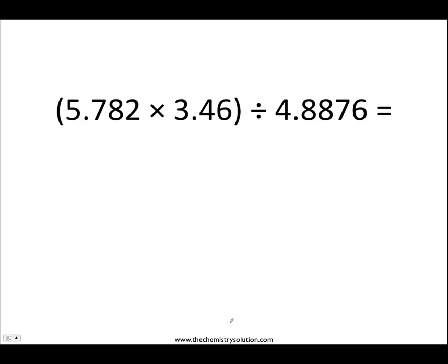Let's try another example — now would be a good time to pause and try the problem on your own. When we multiply 5.782 times 3.46 and then divide by 4.8876, we see that 5.782 has four significant figures, 3.46 has three significant figures, and 4.8876 has five significant figures. Following our rules, we keep the number of significant figures equal to the original number with the lowest count, so we need three significant figures in our final answer, giving us 4.09.